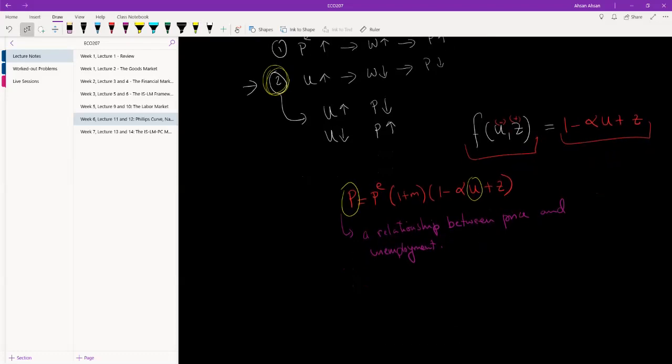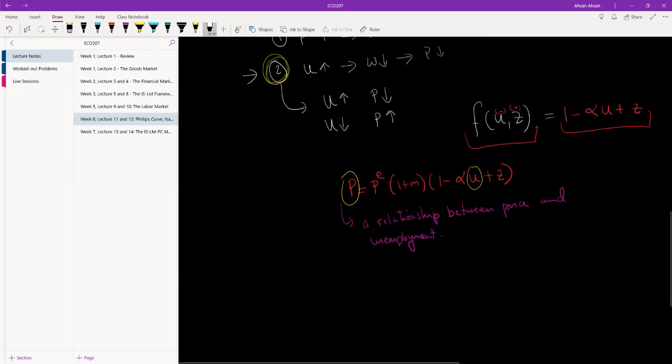Now if we play around with this a little bit, modify this function a little bit, what we can get is—we're going to use π to denote inflation, which is basically the changing price level. Basically, price in period t, the difference between price in period t and price in period t minus 1, is effectively inflation.